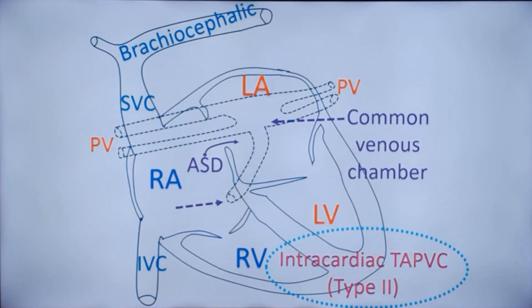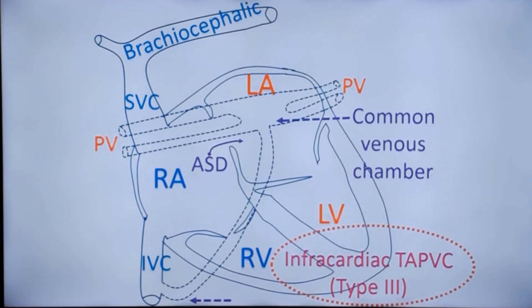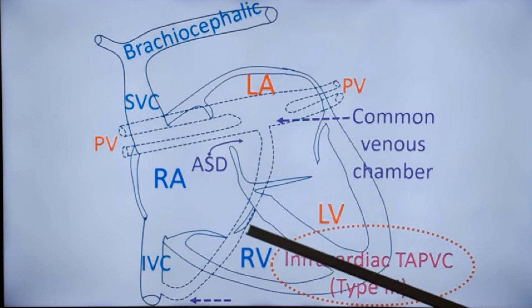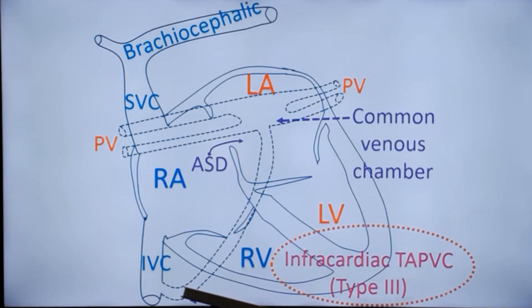This is the third variety, that is the Infracardiac or type 3. In this, the common venous chamber drains downwards intra-abdominally and connects to the portal vein and into the hepatic sinusoids. The blood drains into the inferior vena cava. This circuit by itself is obstructive because it has to pass through the portal sinusoids.